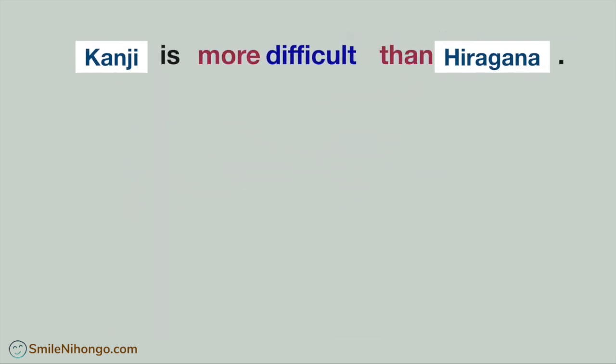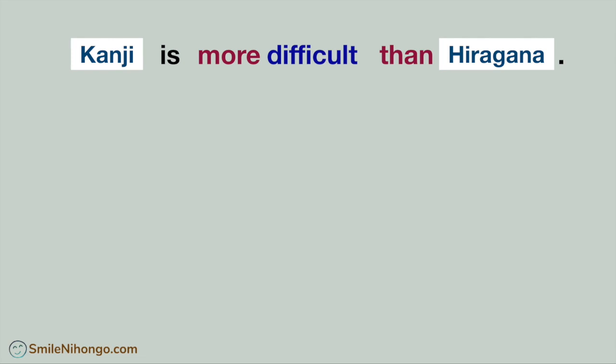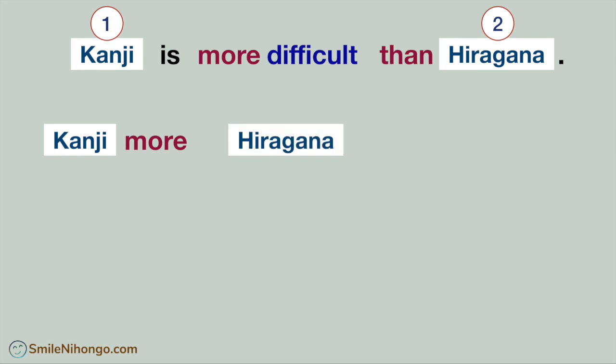Let's say you feel kanji is more difficult than hiragana. These are the two options you are comparing: kanji and hiragana. In Japanese, this is how you phrase the sentence. First, you mark the choice — which is kanji in this case — with 'more.' And mark the one that you didn't choose — which is hiragana — with 'than.' Then describe it with the adjective at the end of the sentence.